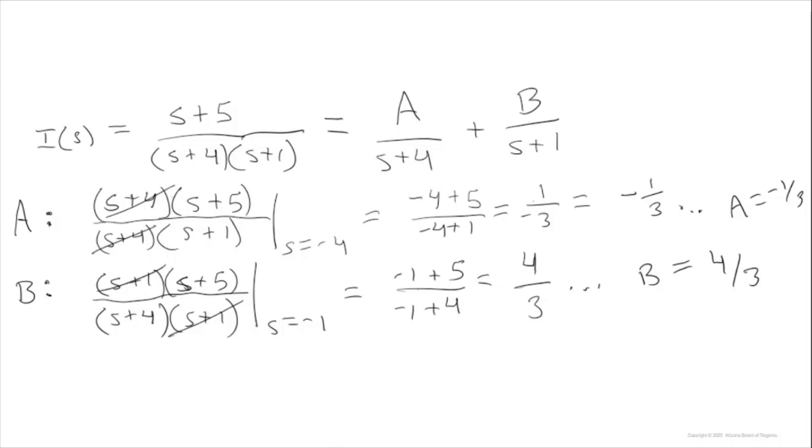Similarly, we multiply both sides by S plus 1 and plug in S equals minus 1, making the A term disappear and isolating the B term. This gives us B equals 4 over 3.